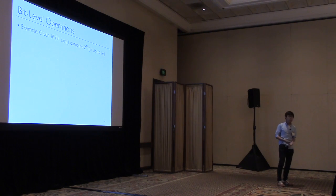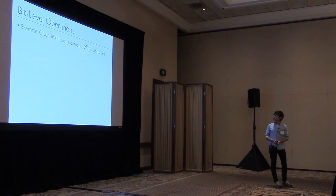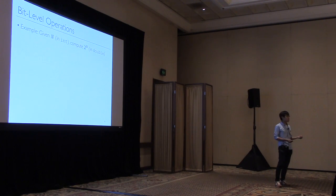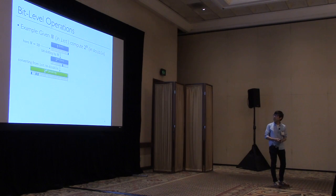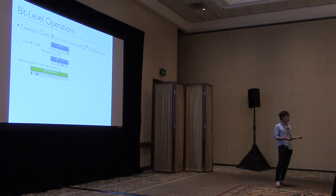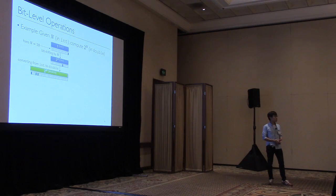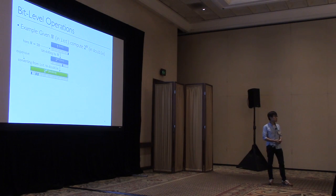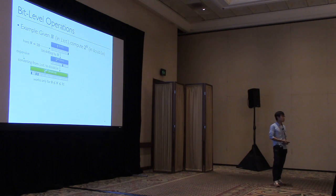Here is a typical example. Suppose you want to compute 2 to the n in double representation given an integer n. A naive way to compute this is to first left-shift by n to get integer 2 to the n, and then convert the integer to a double. However, this approach has two main problems. First, the conversion operation is computationally expensive. And more importantly, this approach works only for a small range of inputs.